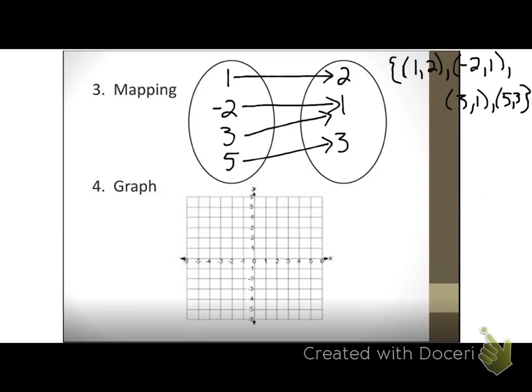The last way to represent a relation is a graph. We can just graph our ordered pairs, and that could be another way to represent our relation. Let's see if we remember how to graph ordered pairs. Which value always comes first in an ordered pair? X. Which value always comes second? Y. Which axis is my X axis?